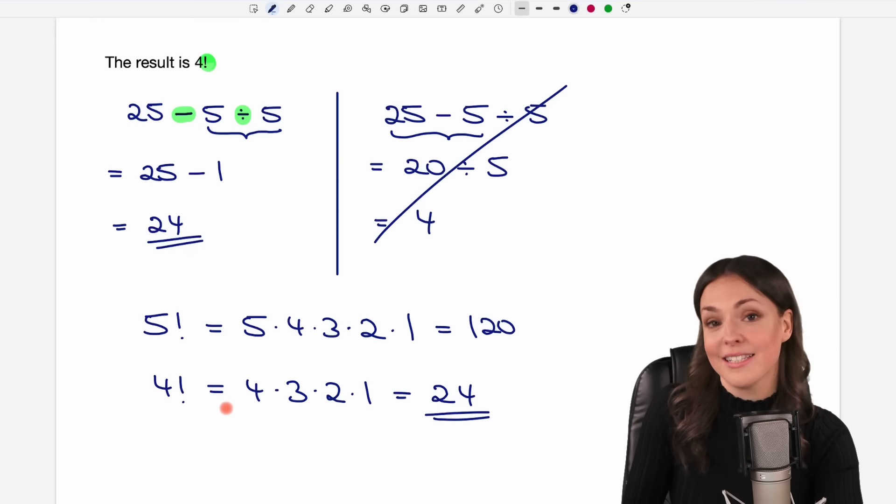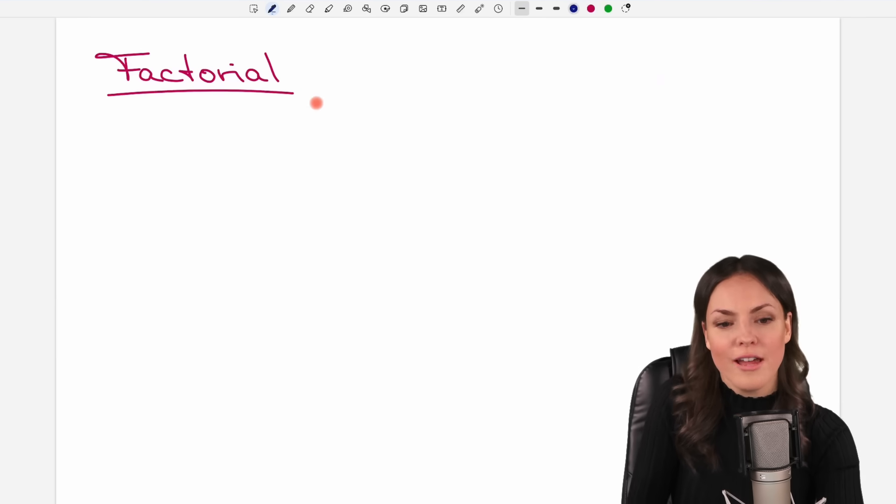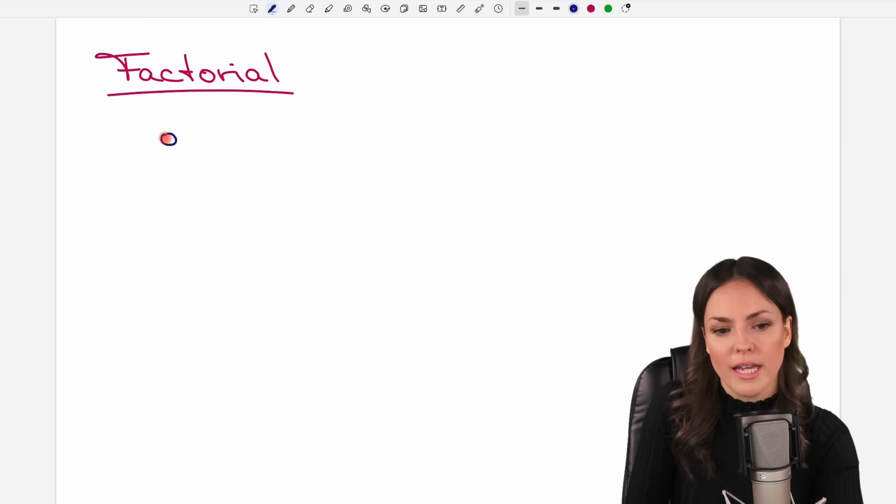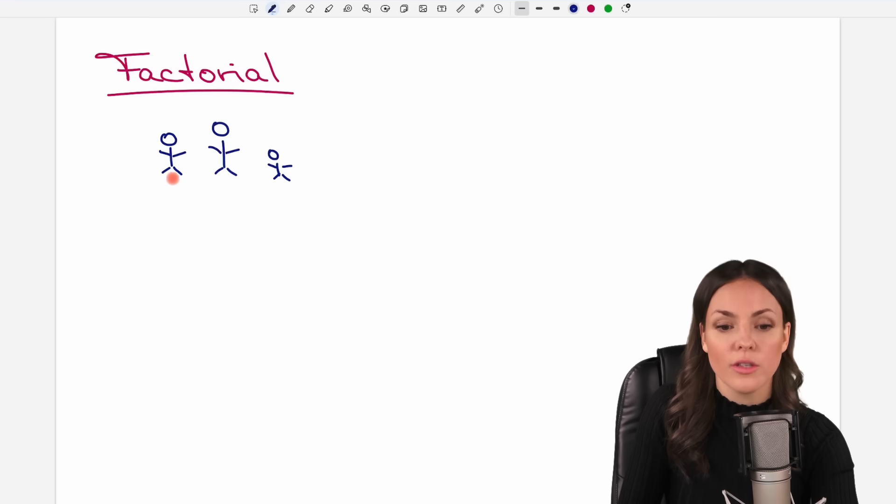So factorial is a nice thing to use. And if you've never heard of it, then factorial is used in combinatorics a lot. So for example, if you want to arrange three people in a row and want to know how many possibilities do I have to arrange these three people, then you can use the factorial to calculate this.